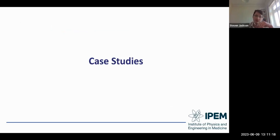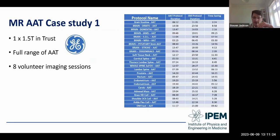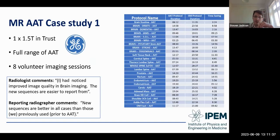Case studies from the North West: first, a trust with a 1.5 Tesla GE scanner with the full range of AAT software. Over four-hour volunteer imaging sessions, protocol timings were significantly reduced. Comments from end users: radiologists noted improved image quality in brain imaging and found new sequences easier to report from. A reporting radiographer said the new sequences are better in all cases than those previously used prior to AAT — a very encouraging endorsement of the AI technology on the GE system.